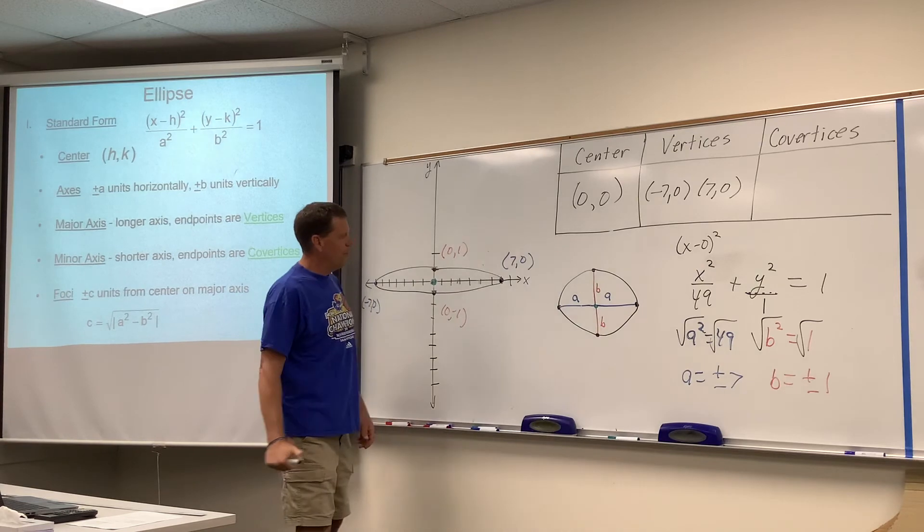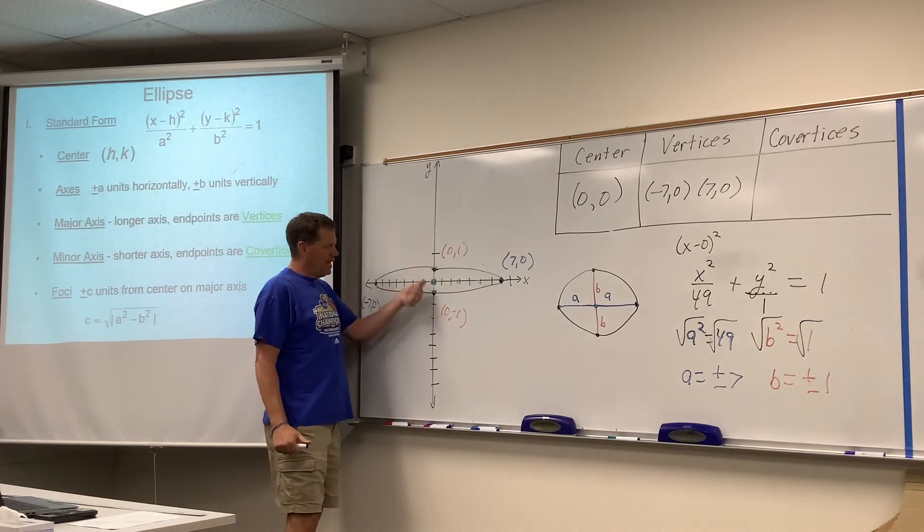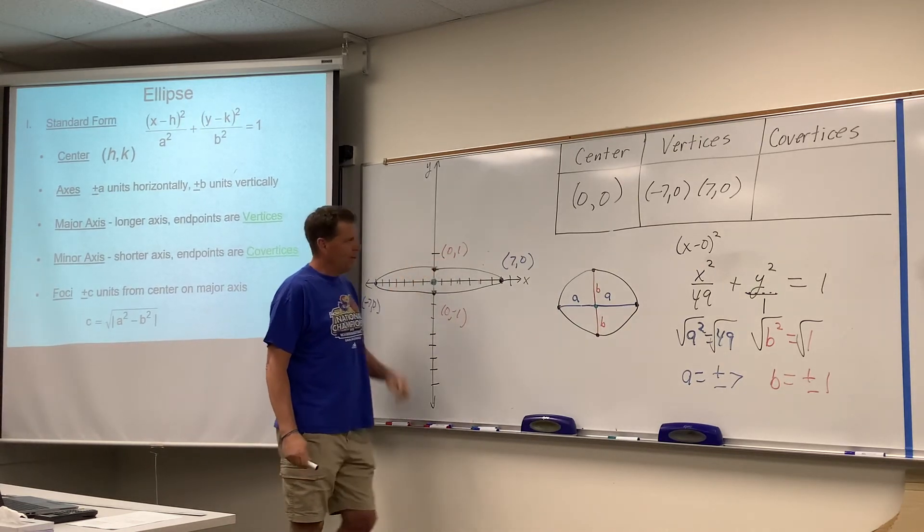And then wouldn't the co-vertices be the up and down, which are 0, 1 and 0, negative 1?